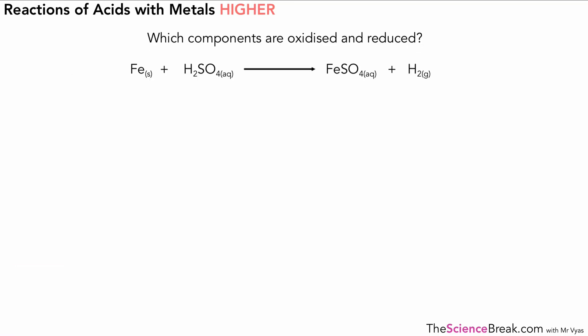For our last example, we're going to have a look at this balanced equation with the state symbols and try to figure out which components have been oxidized and which components have been reduced. To let you know, iron ions (Fe ions) are Fe 2 plus, and sulfate ions written as SO4 are SO4 2 minus. Now we know that in our sulfuric acid and our iron sulfate, the ions are in solution, so we're going to have two hydrogen ions for the acid and sulfate ions.